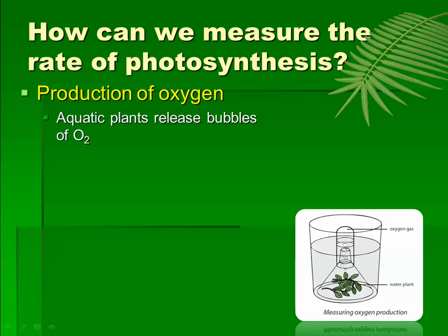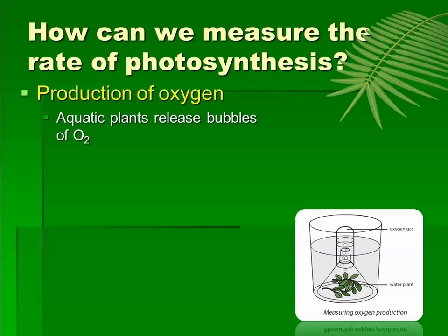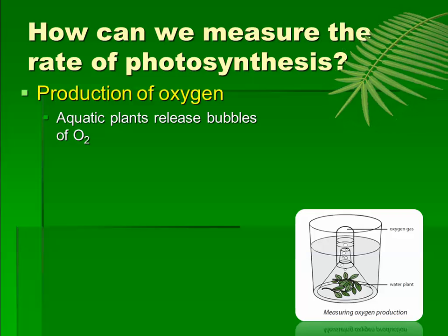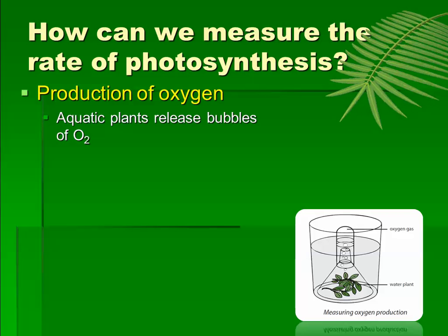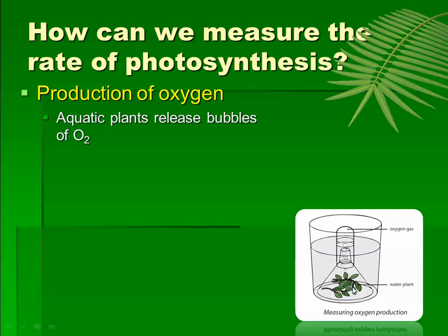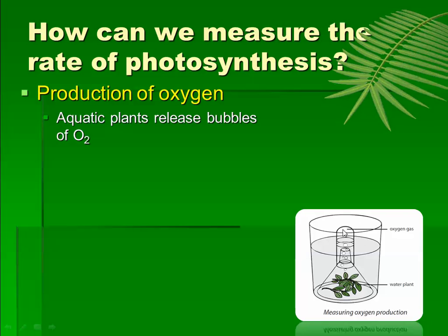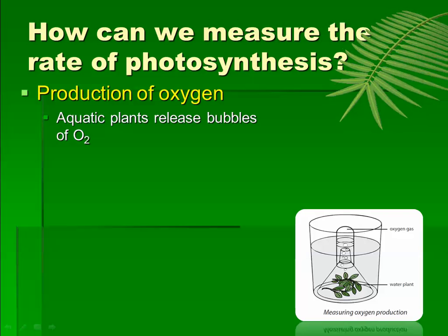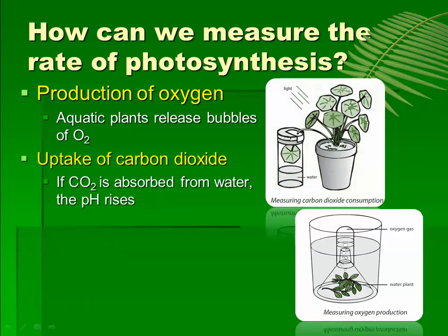When we're looking at photosynthesis, the equation for photosynthesis is the opposite of cellular respiration. Plants are taking in carbon dioxide and water using light energy to produce glucose and oxygen as a waste product. You can measure the production of this waste product oxygen. If you're using aquatic plants, that's very easy because you can measure the volume or count the number of bubbles of gas that are being produced.